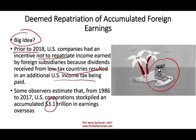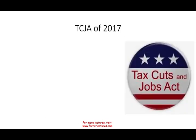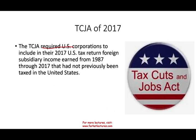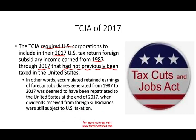After the financial crisis, the U.S. government needed every penny, so they had every incentive to change the law to bring that money back. The Tax Cuts and Jobs Act required U.S. companies to include on their 2017 U.S. tax return foreign subsidiary income earned from 1987 through 2017 — 1987 being when the prior law changed — that had not previously been taxed in the U.S. In other words, accumulated earnings of foreign subsidiaries generated during those 30 years were deemed to have been repatriated. Deemed means whether you brought the money back or not, you're going to pay taxes on it.